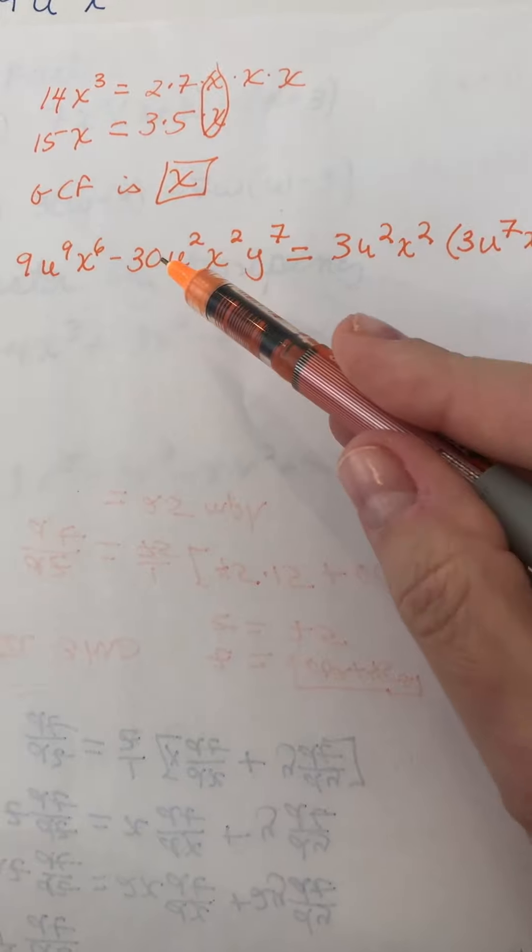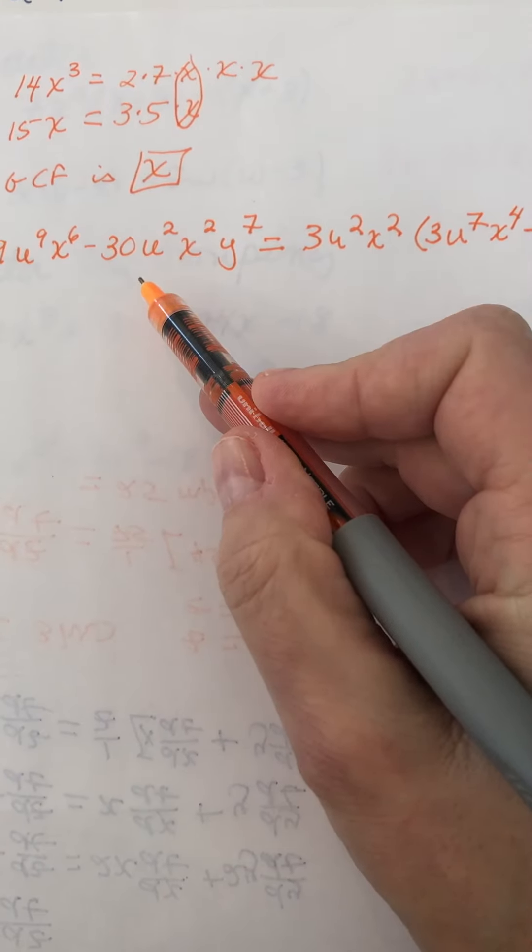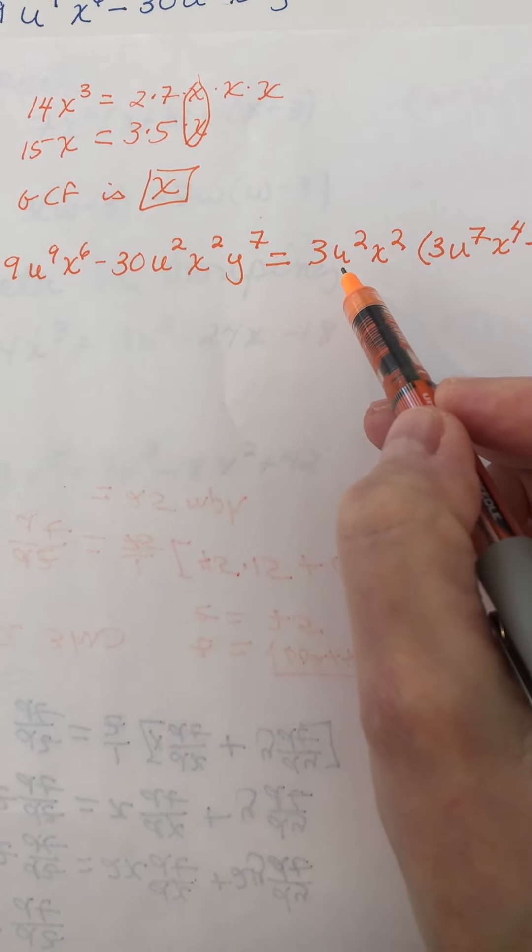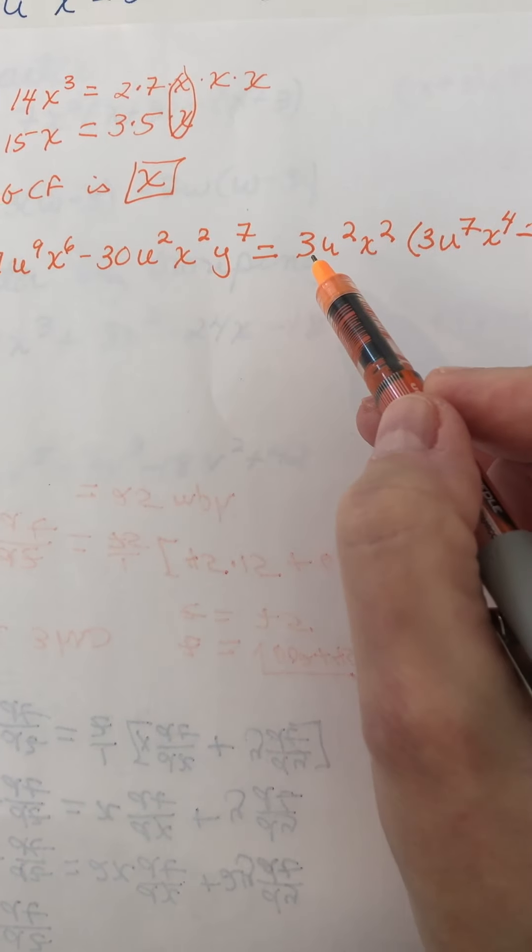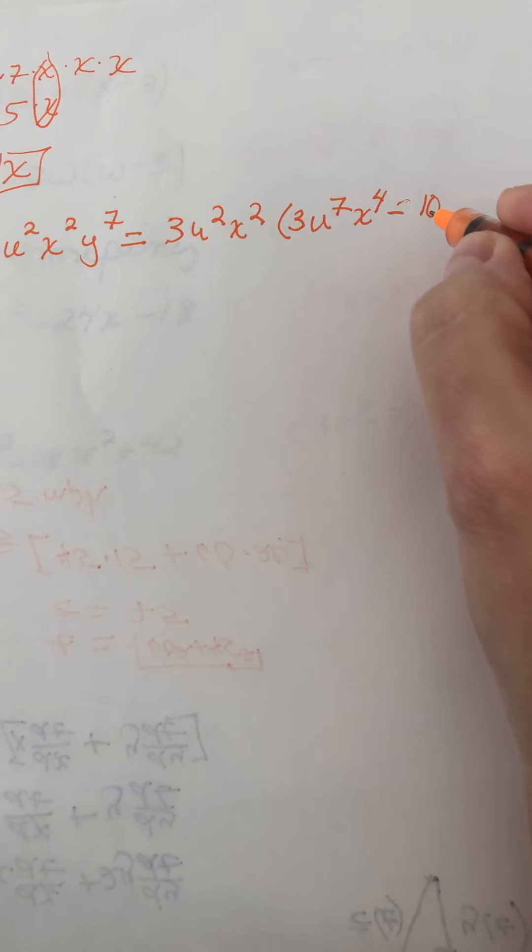And then 3 times 10 gives us the 30, and u squared - we don't need any more u squareds, we don't need any more x squareds, but we need a y to the 7th.